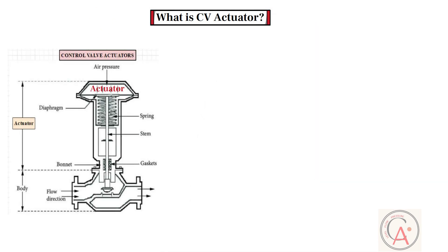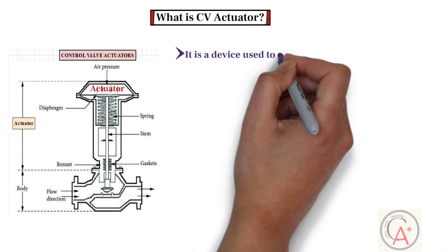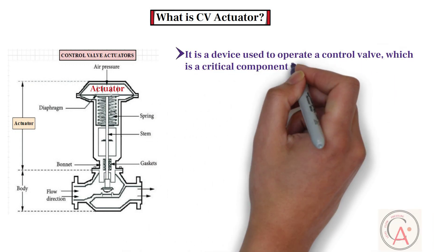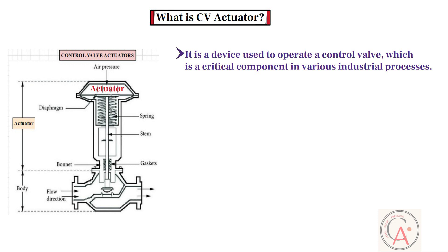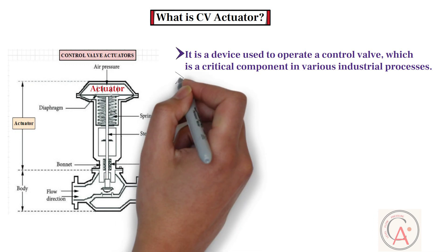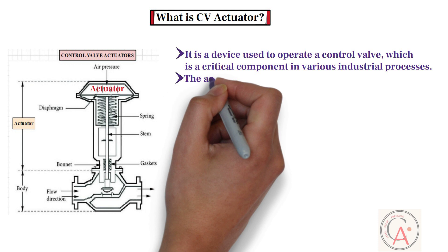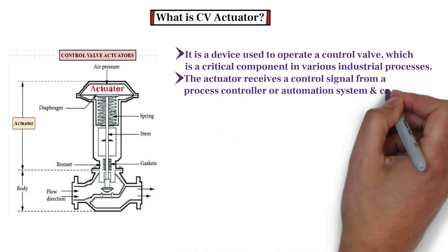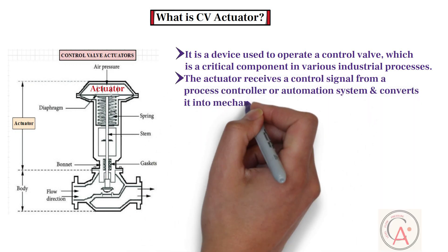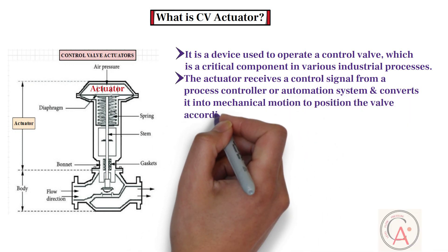A control valve actuator is a device used to operate a control valve, which is a critical component in various industrial processes. The actuator is responsible for moving the valve's closure element — such as a plug, ball, or disc — to control the flow of fluid through the valve. The actuator receives a control signal from a process controller or automation system and converts it into mechanical motion to position the valve accordingly.